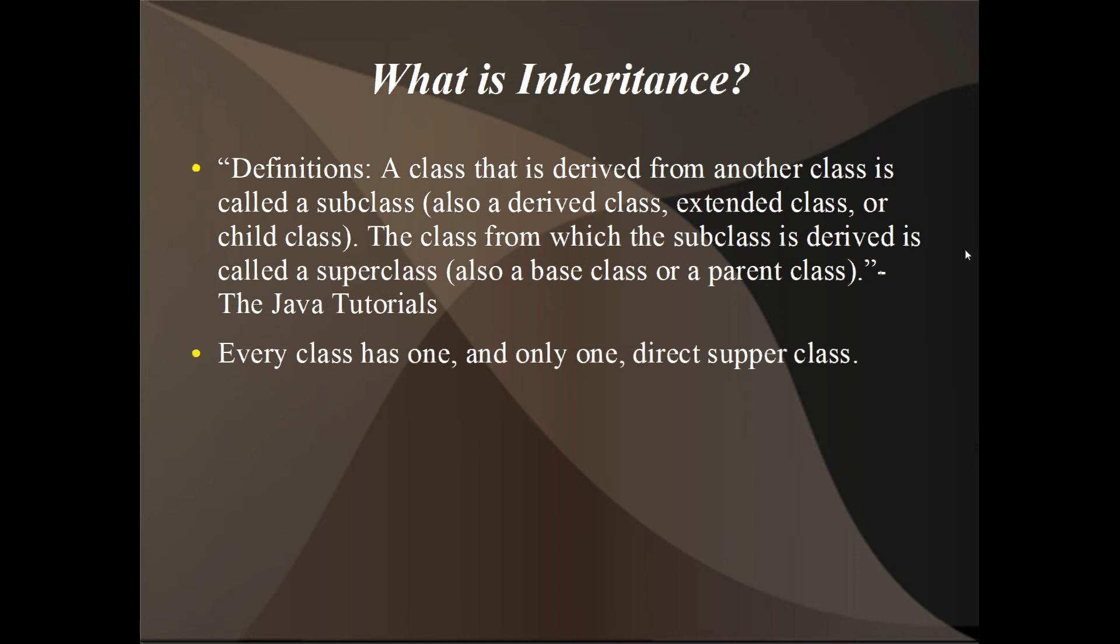The next thing that we have to know is that every class has one and only one direct superclass. So no matter what, every class can only have one class that is extended from, and it has to have one class that is extended from. You may be asking me, how can this be so? Because up to this point, we haven't had any obvious inheritance in our programs.